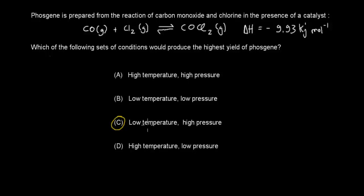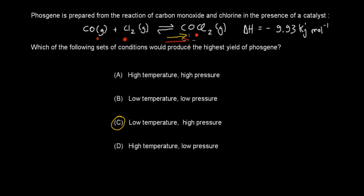Welcome back. The correct answer is C. Lowering the temperature favours the forward reaction because the forward reaction is exothermic — the system shifts right to release energy and counteract the temperature decrease. Increasing the pressure also favours the forward (space-saving) direction, since there are two moles of reactants but only one mole of product. So low temperature and high pressure give the highest yield of phosgene.